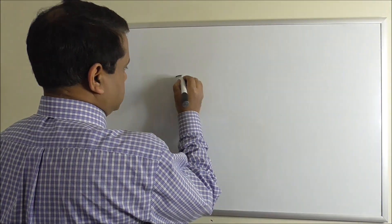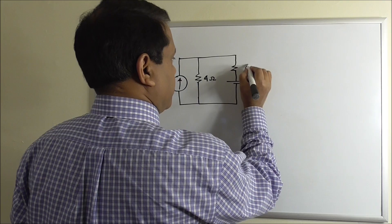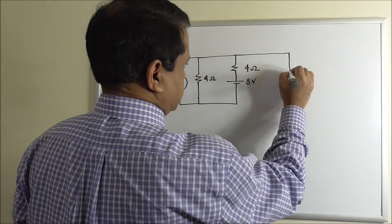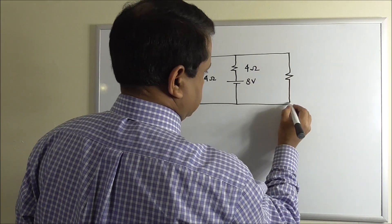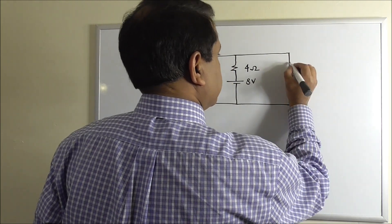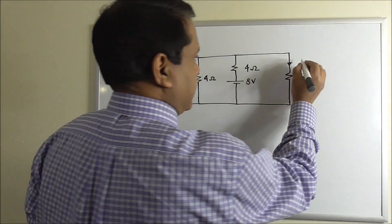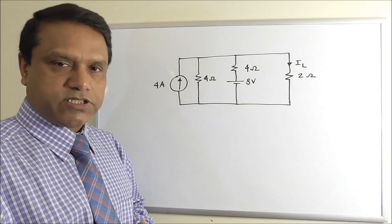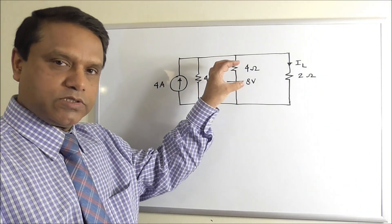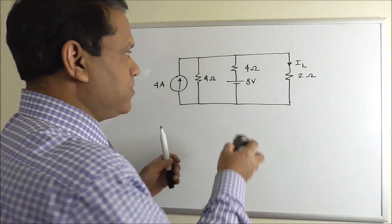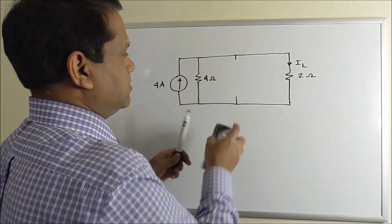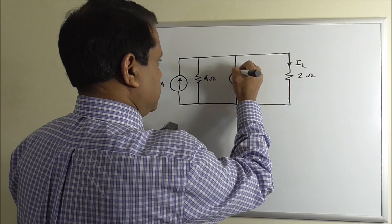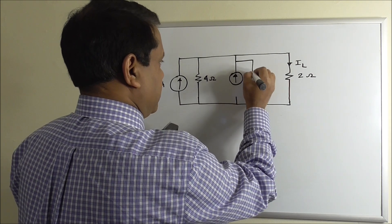Let's draw the circuit. We have a current source, a 4-ohm resistor, a voltage source of 8 volts, and a load resistance of 2 ohms. We need to find the load current IL. This can be solved in many ways, but we will use the source conversion method. We will convert the 8-volt voltage source with its 4-ohm series resistor into a current source with a parallel resistance.